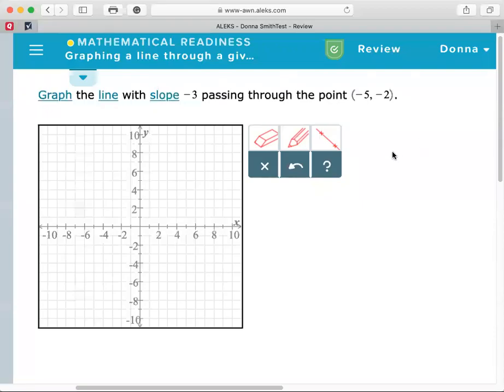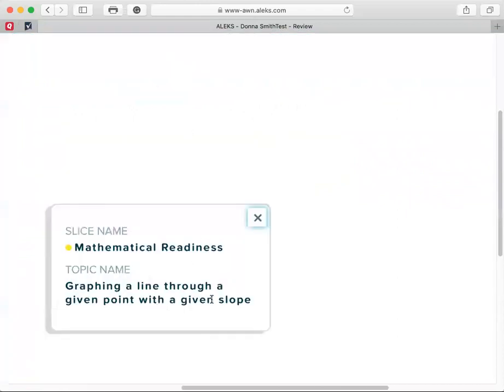Hi class, this is Professor Smith with part 2 of graphing a line through a given point with a given slope.